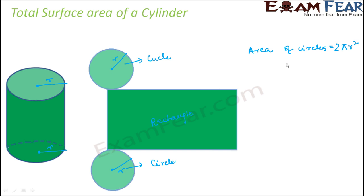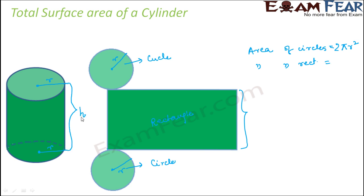So we found out the areas of two surfaces. Now we are left with the area of the rectangle. The area of a rectangle is length into breadth. This is the length of the rectangle and this is the breadth. When you fold this rectangle to form the cylinder, the breadth of the rectangle actually becomes the height of the cylinder. So the breadth of the rectangle is h, which is nothing but the height of the cylinder.